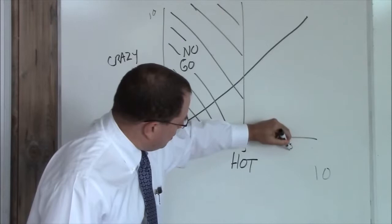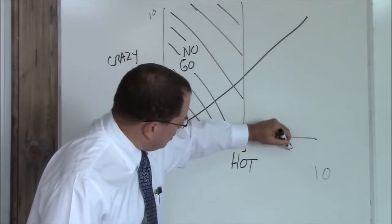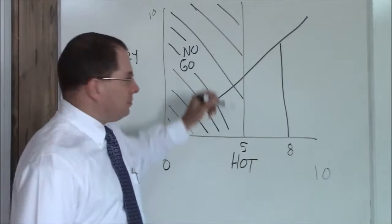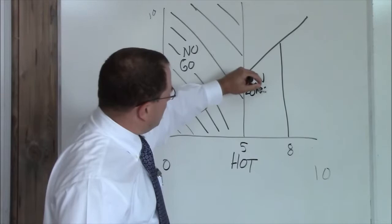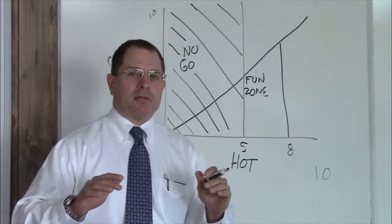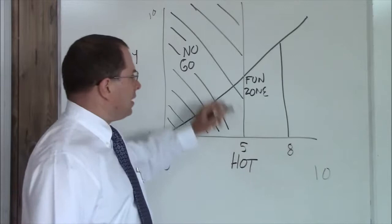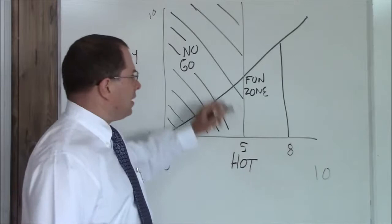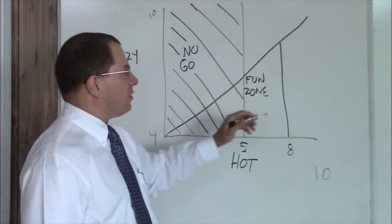Above a 5 and to about an 8 and below the crazy line, this is your fun zone. You can hang out here and meet these girls and spend time with them. That's your fun zone but keep in mind when you're in the fun zone you want to move out of the fun zone to a more permanent location. So that's the fun zone above a 5 hot, below an 8 hot and below the crazy line. This means these are most of the time not crazy.